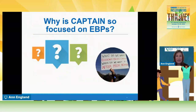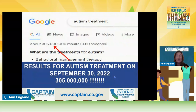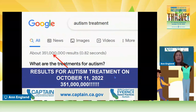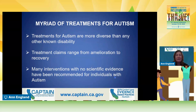So why are we so focused on evidence-based practices? If you did a Google search for 'autism treatment,' on September 30th I found 305 million hits, and then on October 11th I got 351 million hits. There are not that many evidence-based practices, but you can see there's a myriad of treatments for autism—more diverse than any other known disability. Those treatment claims range from amelioration to recovery, and most of them really have no scientific evidence. They're recommending that you spend money on things that really don't have the research to support that it's worth the time, money, effort, and energy to implement.